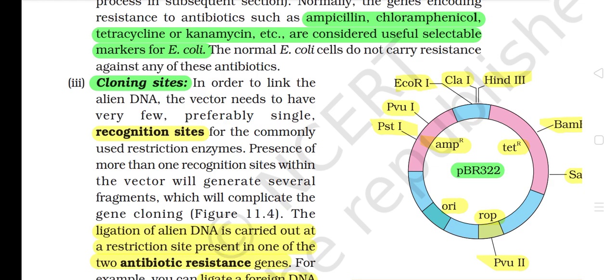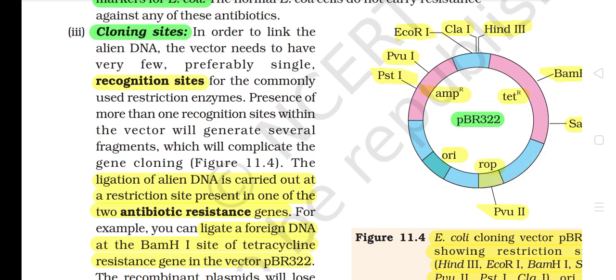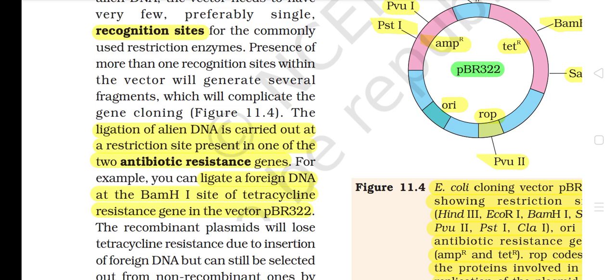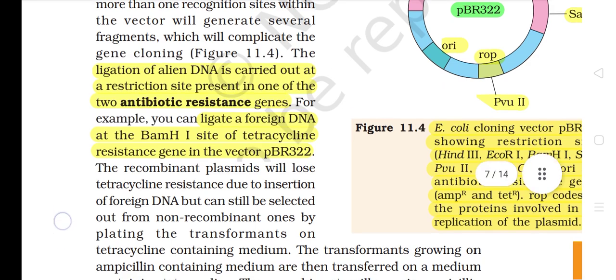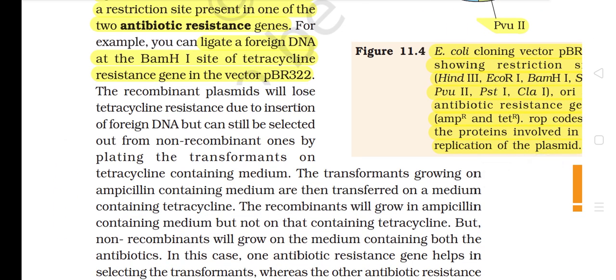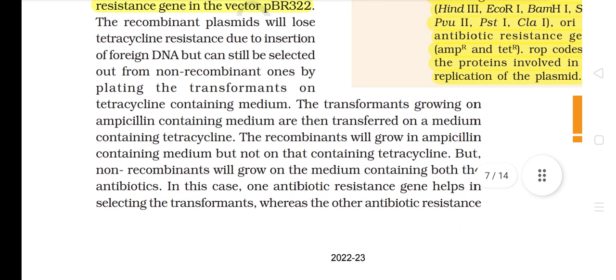3) Cloning Sites: In order to link the alien DNA, the vector needs to have very few, preferably single, recognition sites for the commonly used restriction enzymes. Presence of more than one recognition site within the vector will generate several fragments, which will complicate the gene cloning. The ligation of alien DNA is carried out at a restriction site present in one of the two antibiotic resistant genes. For example, you can ligate a foreign DNA at the BamHI site of the tetracycline-resistant gene in the vector pBR322. The recombinant plasmids will lose tetracycline resistance due to insertion of foreign DNA, but can still be selected out from the non-recombinant ones by plating the transformants on tetracycline-containing medium. The transformants growing on ampicillin-containing medium are then transferred on a medium containing tetracycline. The recombinants will grow in ampicillin-containing medium but not on that containing tetracycline, but non-recombinants will grow on the medium containing both antibiotics.